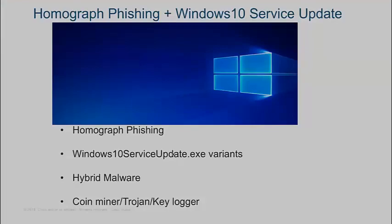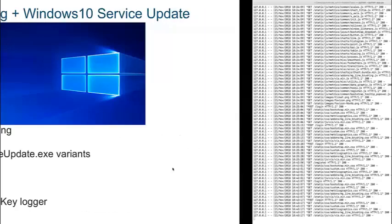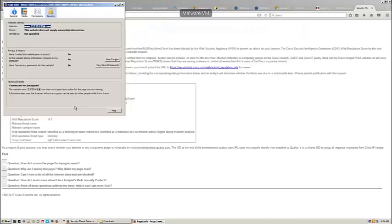The attacker drops something called a 'Windows service update.exe' which is a hybrid malware — it can be a coin miner (as Paul discussed about crypto mining), a trojan, or a keylogger. It looks like a legitimate Windows.com domain, but when you update and check, it's actually malicious. In Umbrella, we dig into this and determine whether it's a legitimate domain or not.